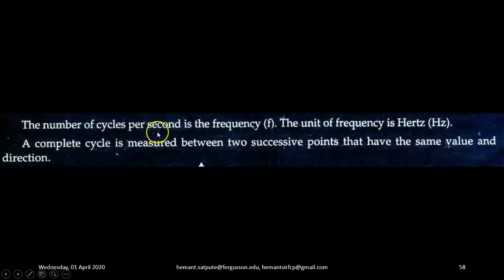Frequency. The number of cycles per second is known as the frequency of the AC and it is denoted by the symbol small f. The unit of frequency is Hertz (Hz). A complete cycle is measured between two successive points that have the same value and direction.